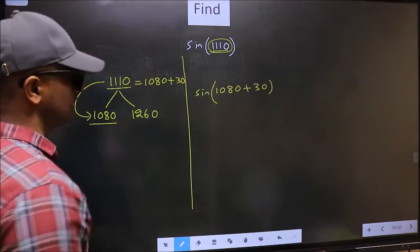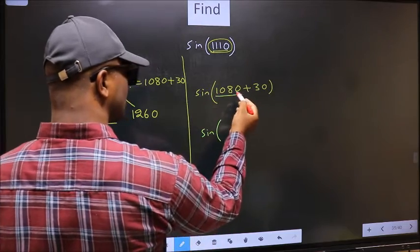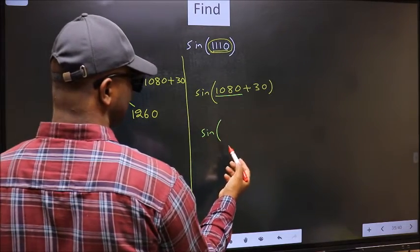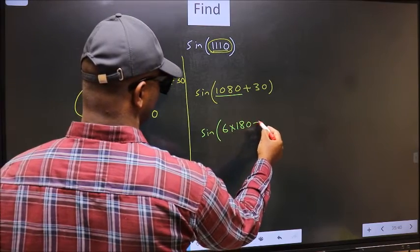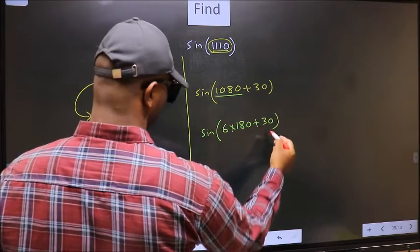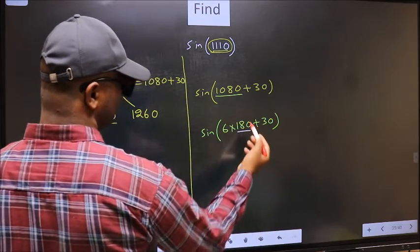Next, sine. Now 1080 we should replace by 6 times 180 plus 30. Next, here we have 180.